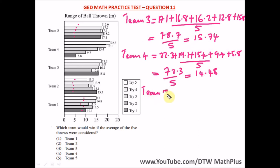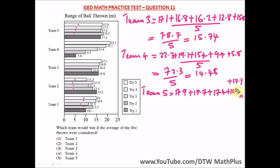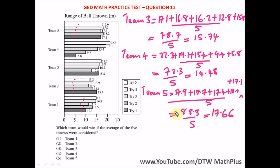Let's find team 5. My bet is team 5 is the highest — the team that would win. 17.9 + 17.7 + 17.4 + 18.2 + 17.1 = 88.3, divided by 5, which gives us 17.66.